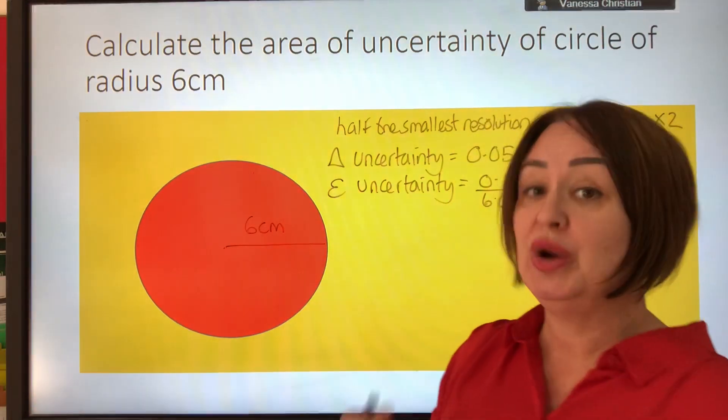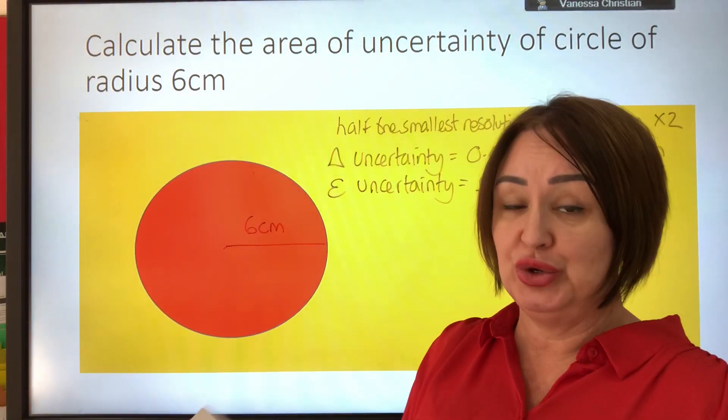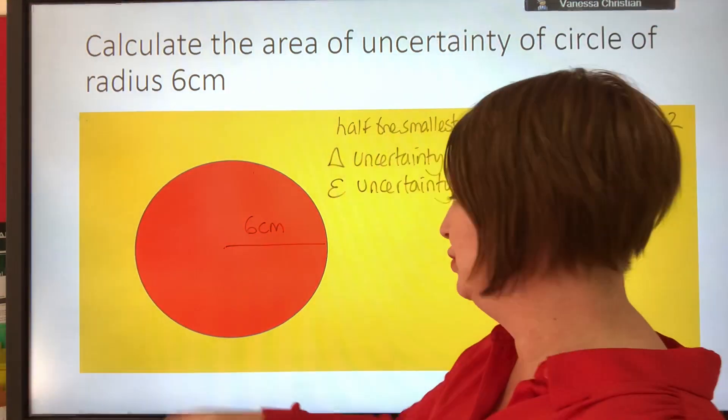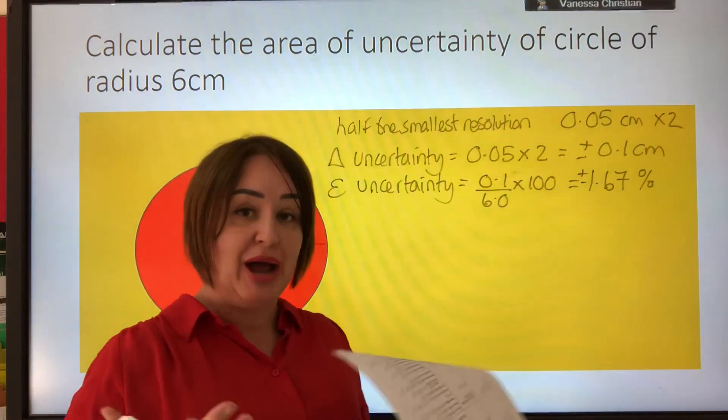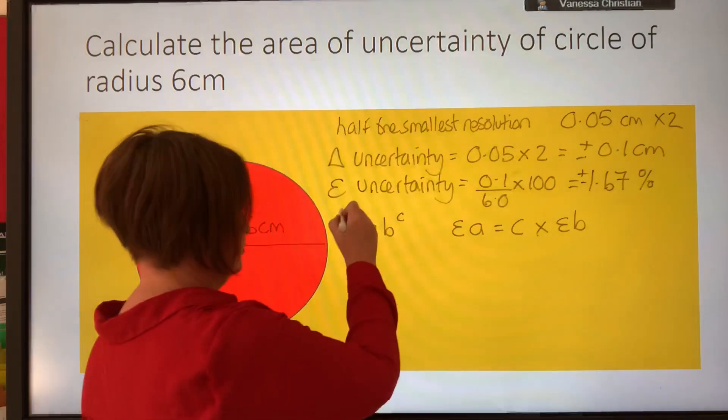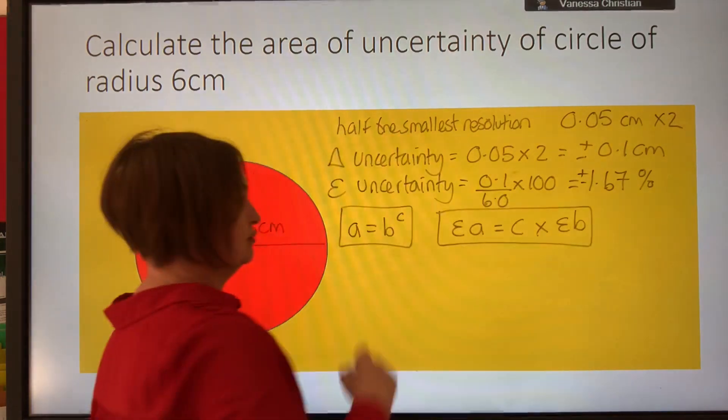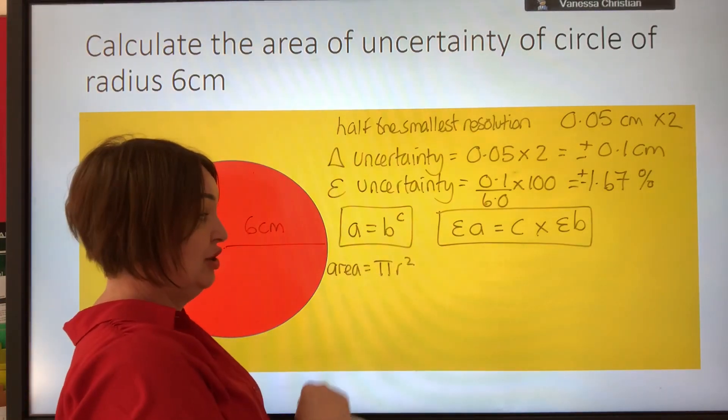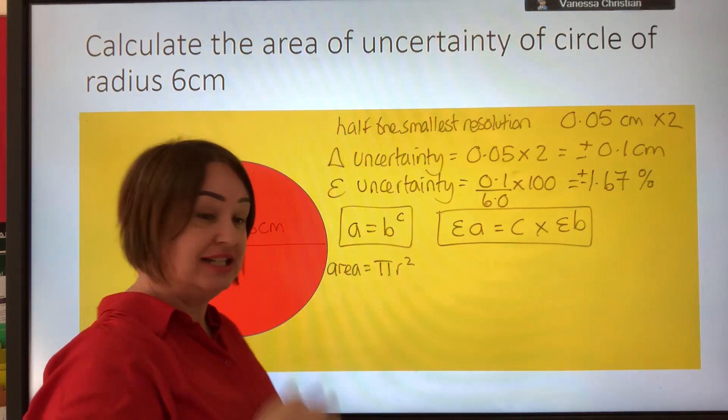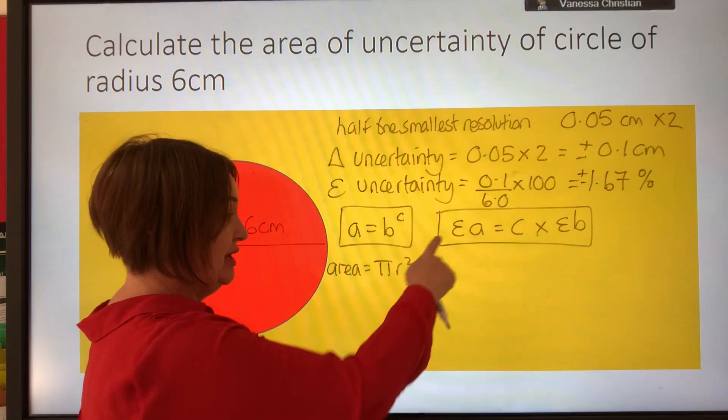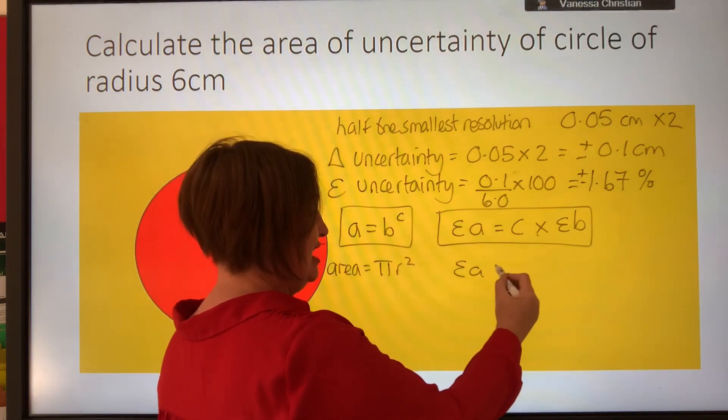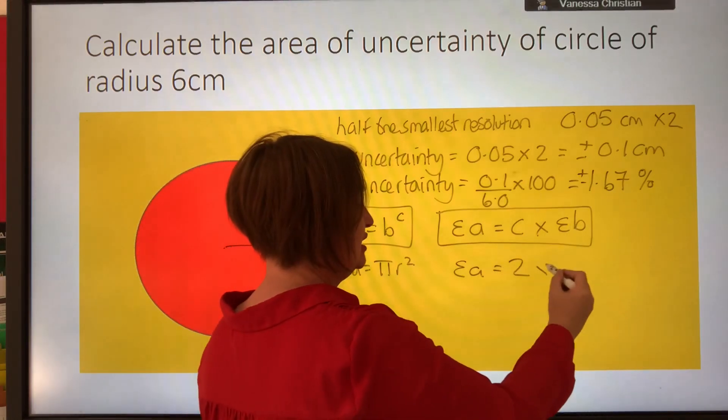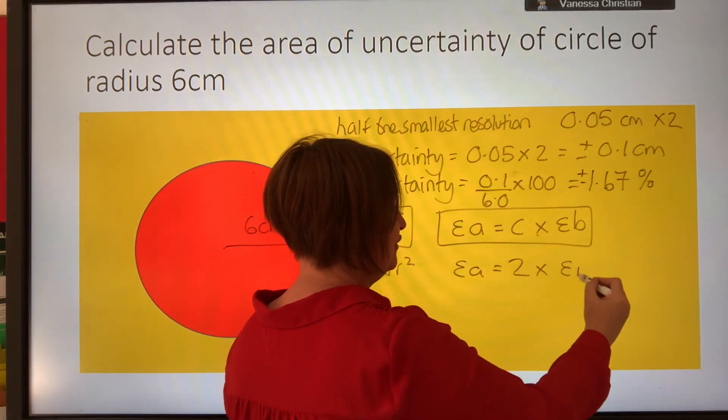Well, we use the sheet that AQA have given us here. The exam board tells us that the power rule goes like this. And we know that this relates to the area equals pi r squared. So pi doesn't have any uncertainty, it's a constant in this equation. So what we're going to say is that percentage uncertainty for area is equal to - we're going to take the 2 down and times it by the percentage uncertainty for our radius.